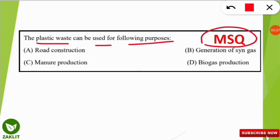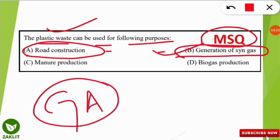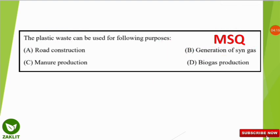The correct options are option A — road construction — and option B — generation of syngas, that is synthetic gas. Syngas is produced through gasification, where plastic waste is reacted with a gasifying agent such as steam, oxygen, or air at high temperatures of around 500 to 1300 degrees Celsius.